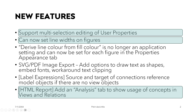On the new features: it now supports multiple selection when editing user properties, and you can set line width within the diagram — the width of figures — and also derive line color from fill colors. It's no longer an application setting and can now be set per figure in the property appearance tab. There's also an image export feature, a label expression feature, and finally an analysis tab added to the HTML report. I'll go through these three highlight features to demo for you.